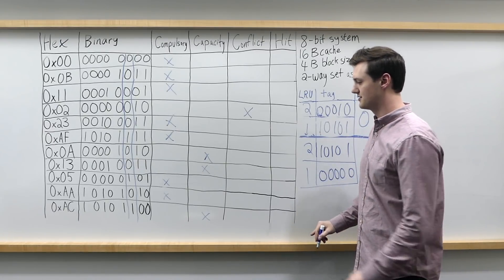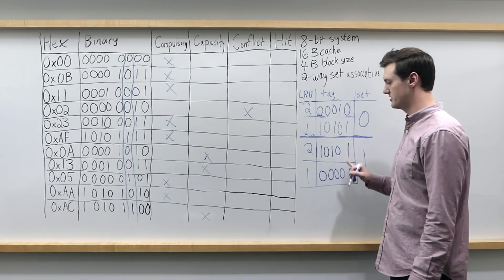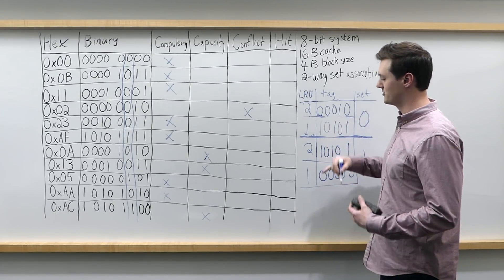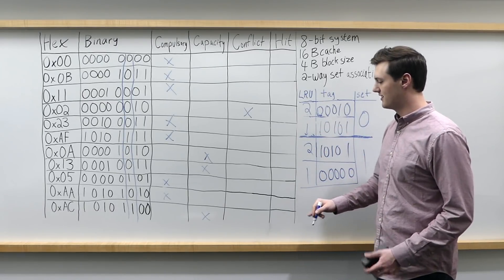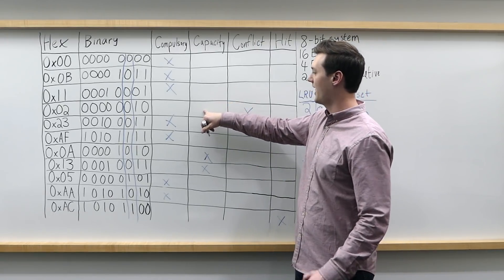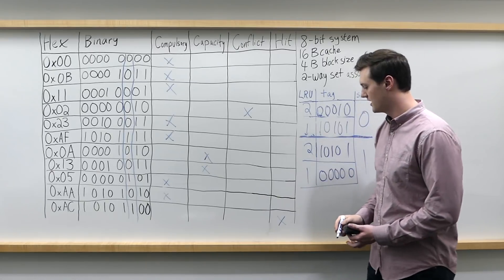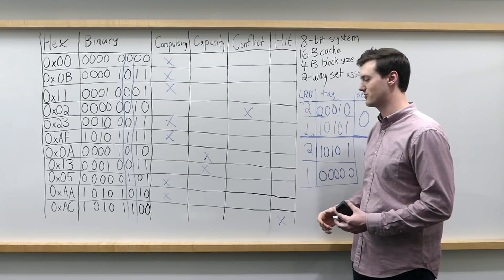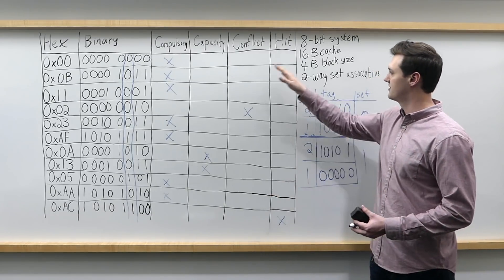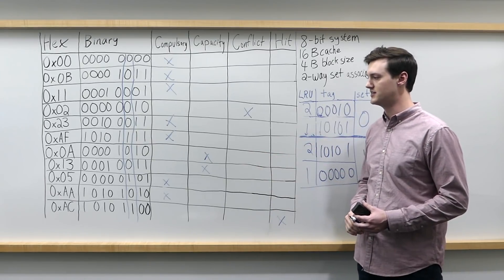And now finally, for this last access 0xAC, we're in set 1 with tag 10101, and we see that this is actually a hit. This is one of the more interesting cases — we had classified it as a capacity miss, but now in our final cache we have a hit. If we're simulating on our actual final cache and we have a hit, we still classify it as a hit rather than a capacity miss. A hit in our actual cache will trump any compulsory, capacity, or conflict miss classification, because a hit isn't a miss at all. So this is the final breakdown of the three C's for these particular memory accesses. It can take a while to run through these problems, but hopefully this gives you a better idea of how to walk through something like this.